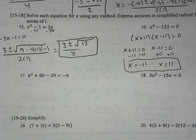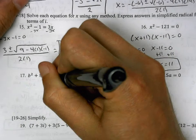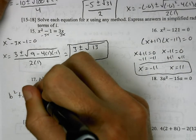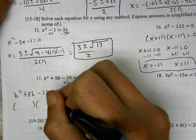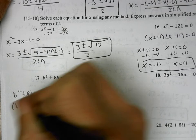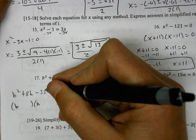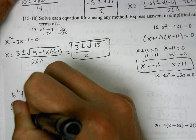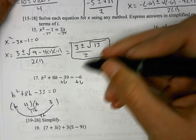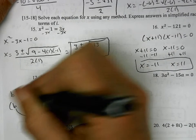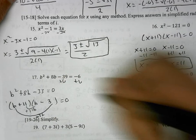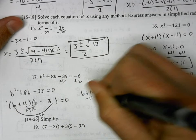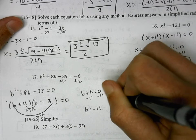Number 17: this is not equal to 0, so add 6 to both sides: b squared plus 8b minus 33 equals 0. This factors using a double bubble. The front must give b squared, so that's b and b. The last two multiply to negative 33, so that's 11 and 3. For the middle term to equal positive 8b, we need positive 11 and negative 3. Factored: (b + 11)(b − 3) = 0, giving b = negative 11 and b = 3.